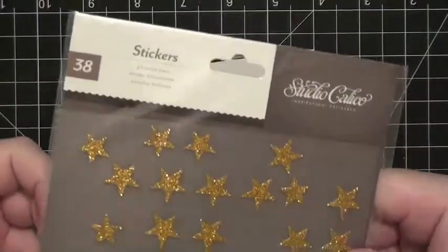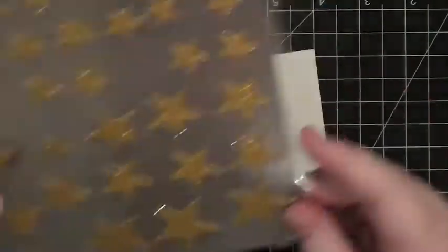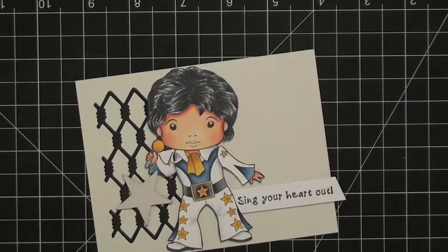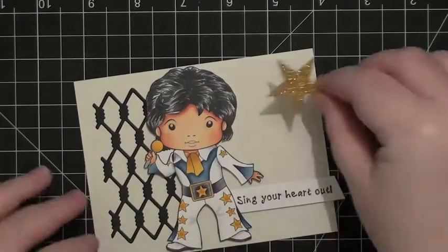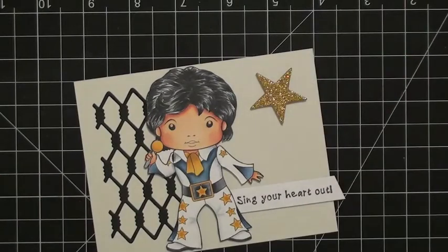Okay, so to finish off I've grabbed some Studio Calico glittered stars here and I'm just adding dimensional adhesive to the large one. And then I've also pressed another two just straight down on the cardstock as well.